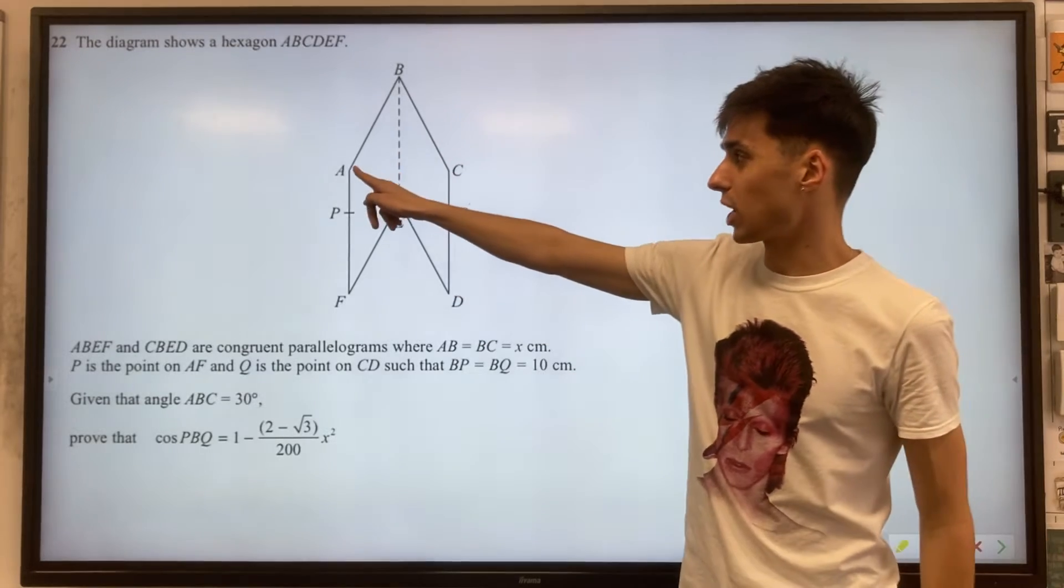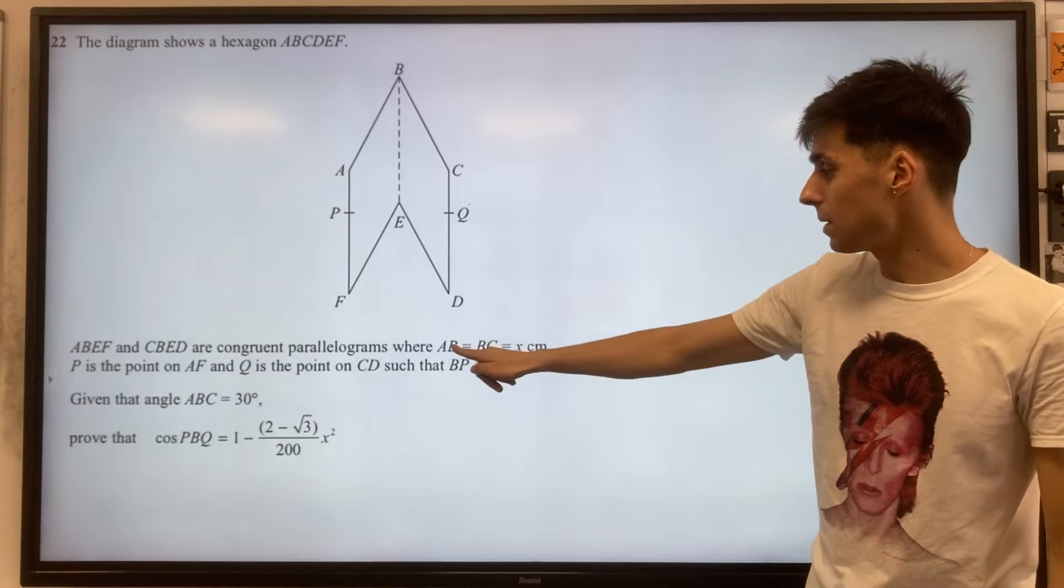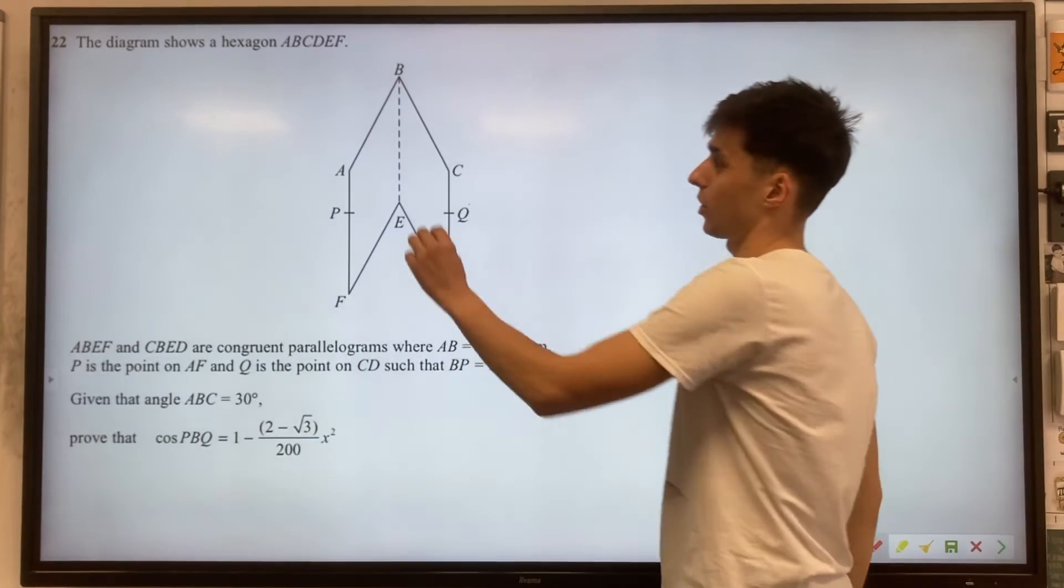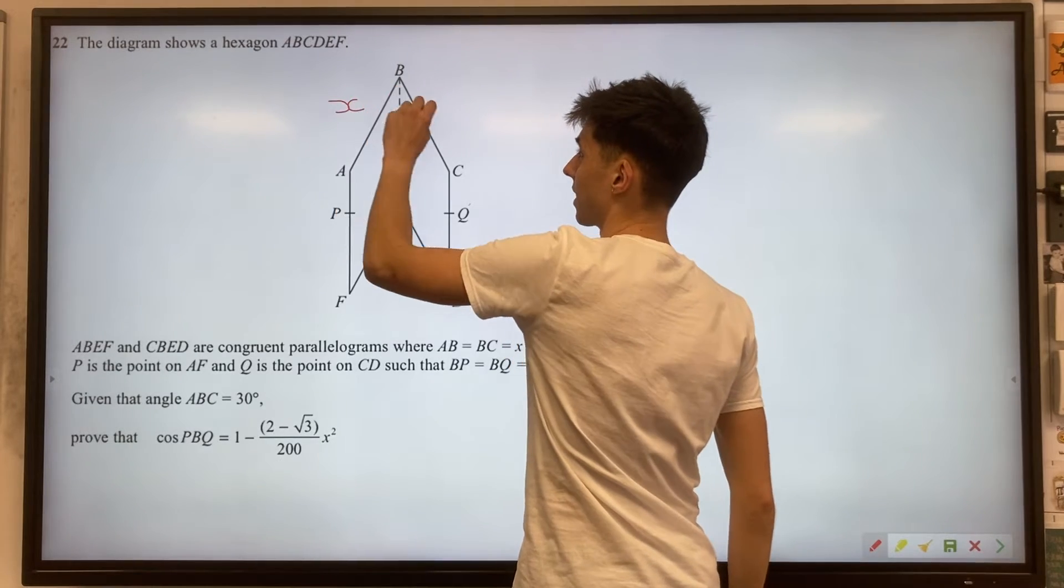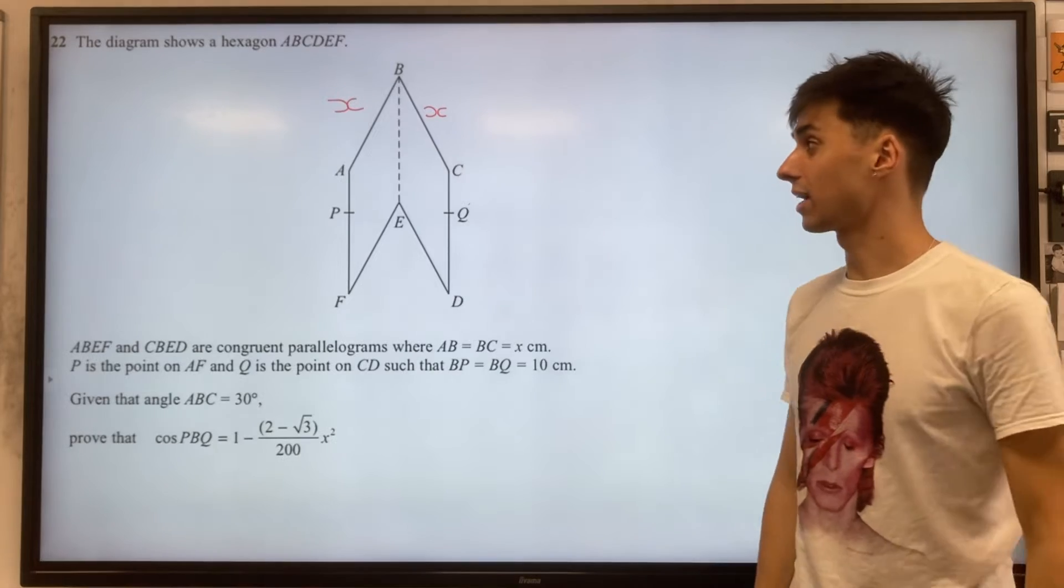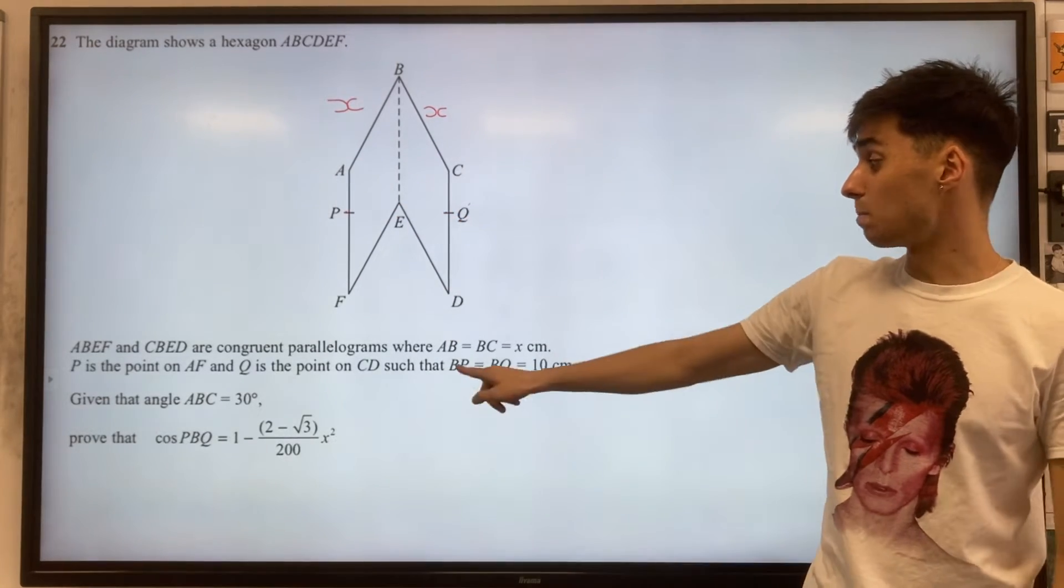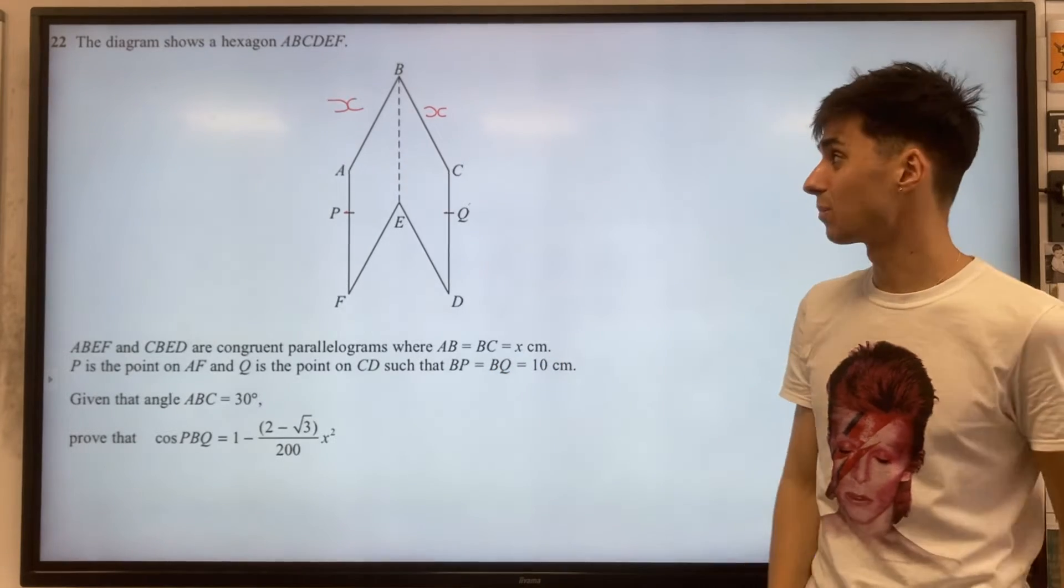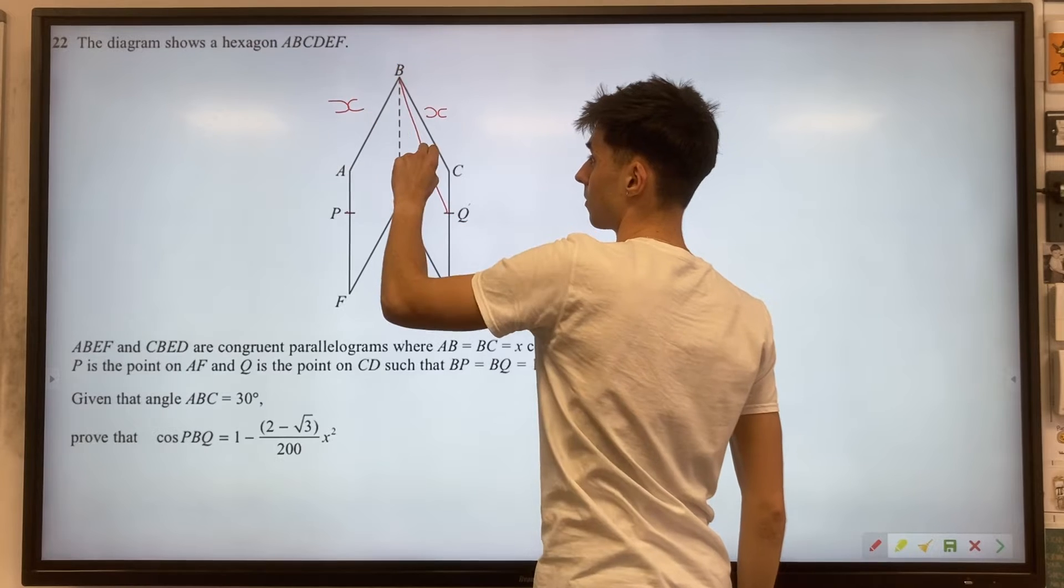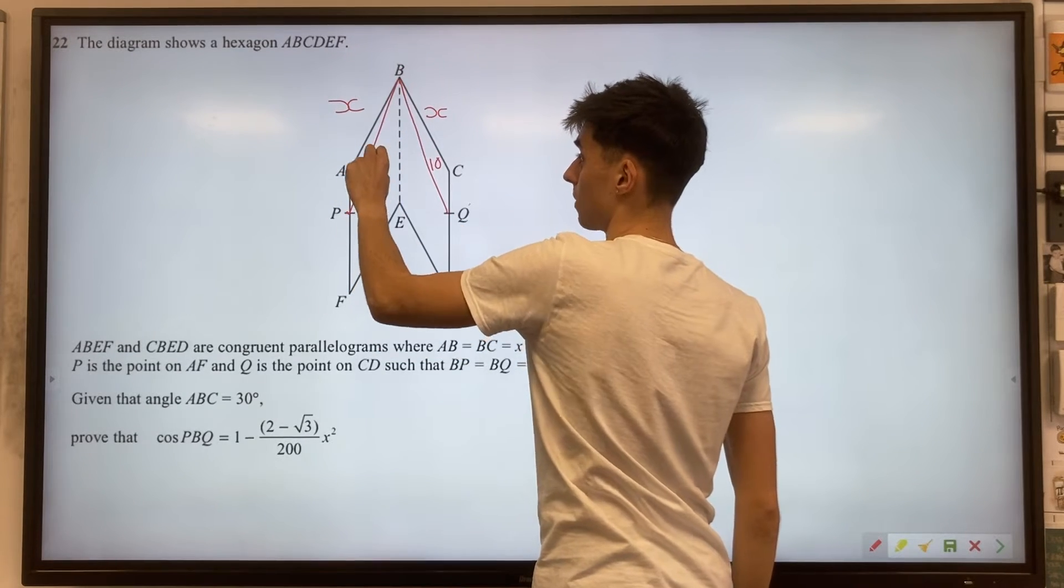We're given this shape made up of two congruent parallelograms where AB equals BC and they're both X. So let's write this on our diagram. We've got an X here and an X here. We also get given some information about P and Q, and BP is equal to BQ, which is 10. So let's draw this on. That will be this length here being 10. This length here also being 10.